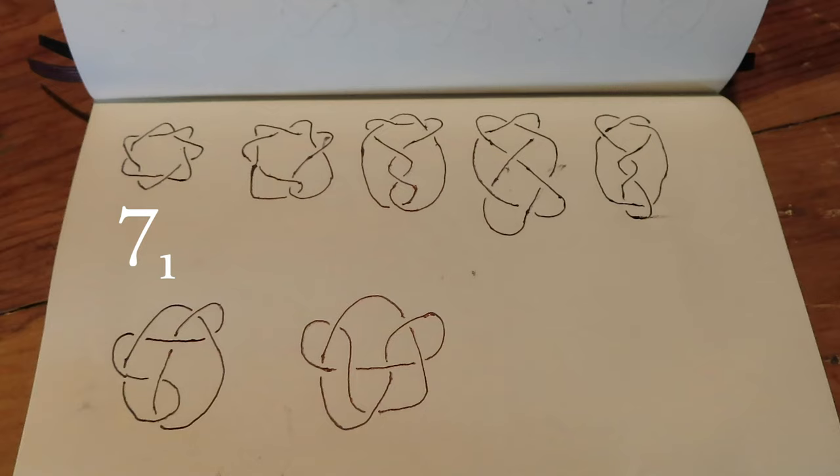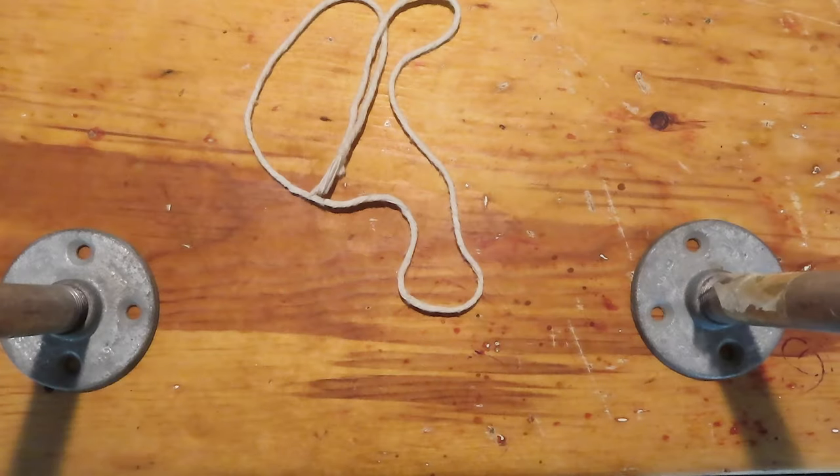To kick things off, we're starting with what might be the most blatantly symmetric of the bunch, the seven one knot. It basically amounts to a seven pointed star. Let's tie in.